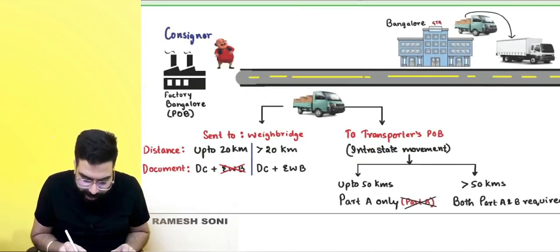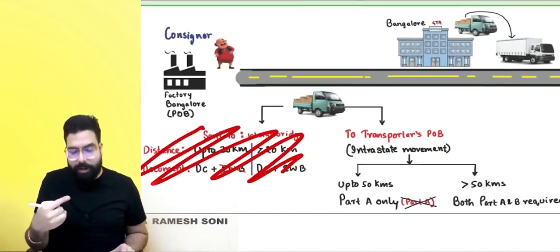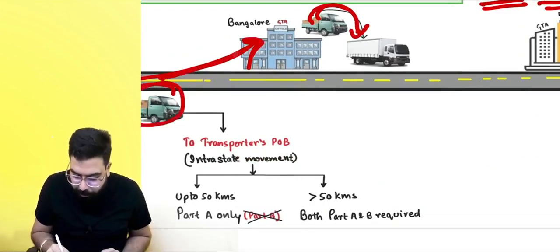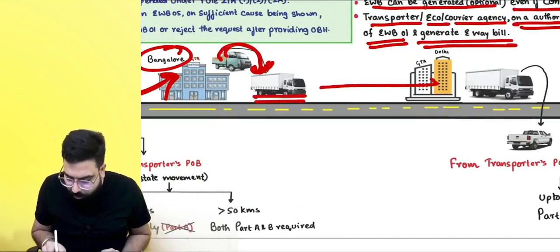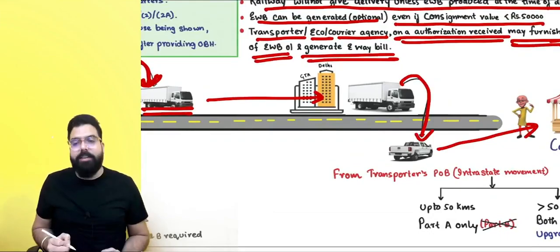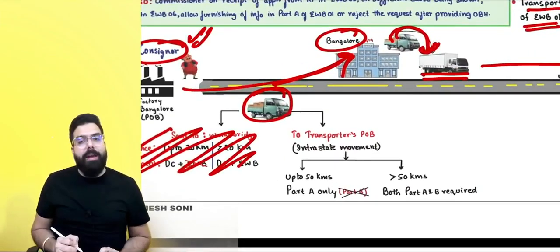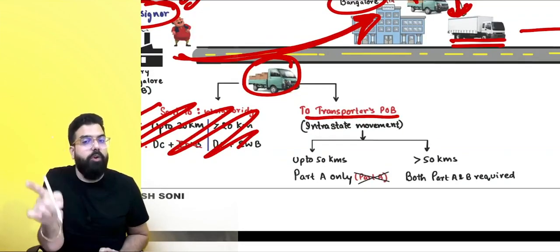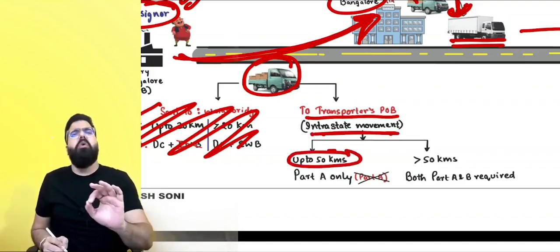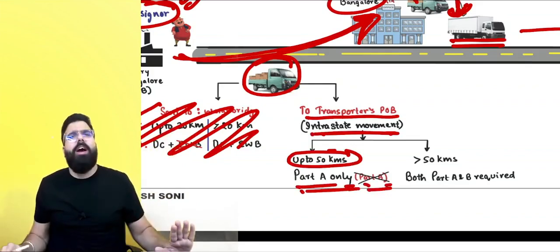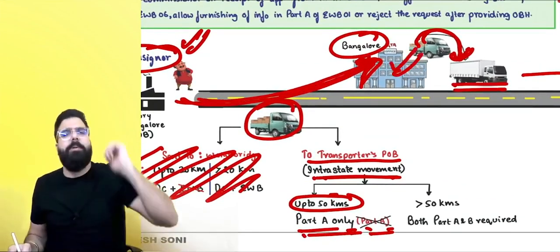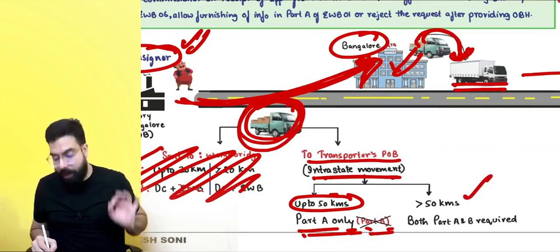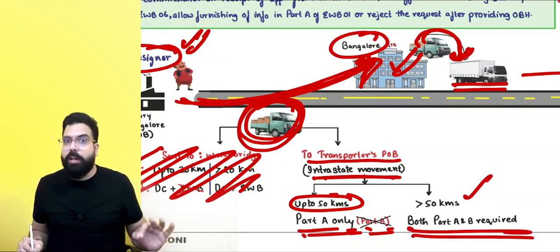When goods are sent via a transporter's godown: if the consignor is sending goods to the transporter's place of business and the movement is intrastate and up to 50 kilometers, only Part A needs to be filled — Part B is not required; just assign the e-way bill to the transporter who will update Part B. If the movement to the transporter's place of business is intrastate but more than 50 kilometers, both Part A and Part B are required.